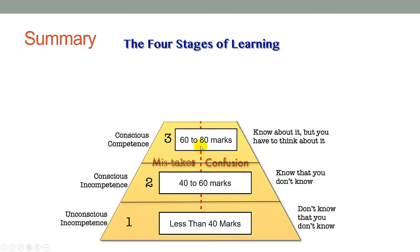Then from here, your child will be able to go to the third stage where we call this conscious competence. And this is the stage where your child knows about it but still has to think about it. Your child still needs some time to think about it and this is the part where students are getting between 60 to 80 marks. And if your child is in this stage, your child has a pretty good foundation and now is the time to focus on solving more challenging word problems.